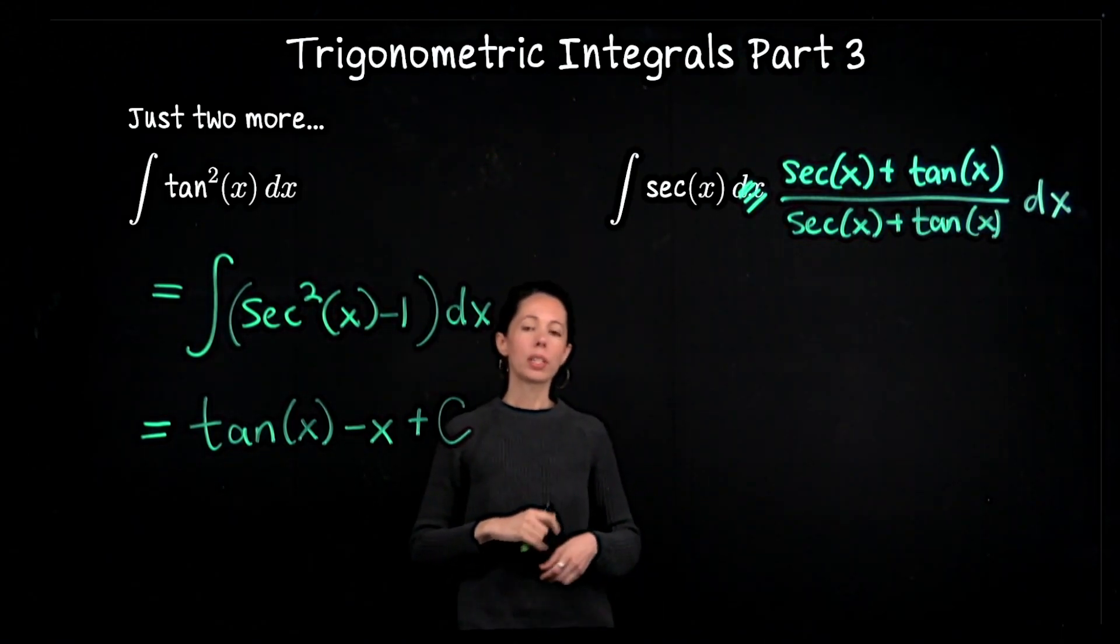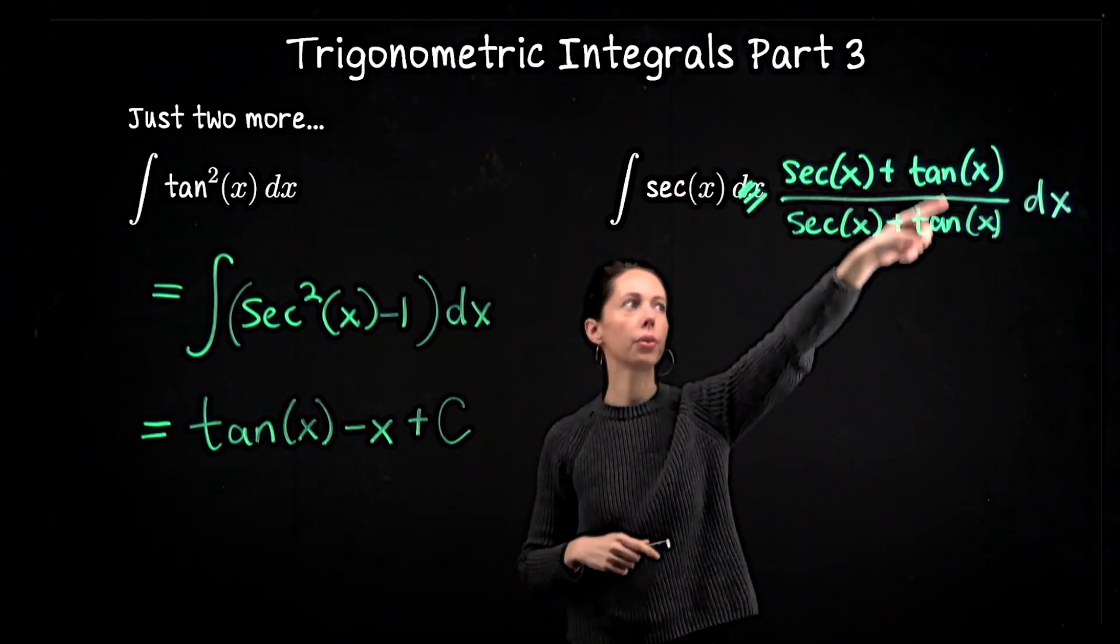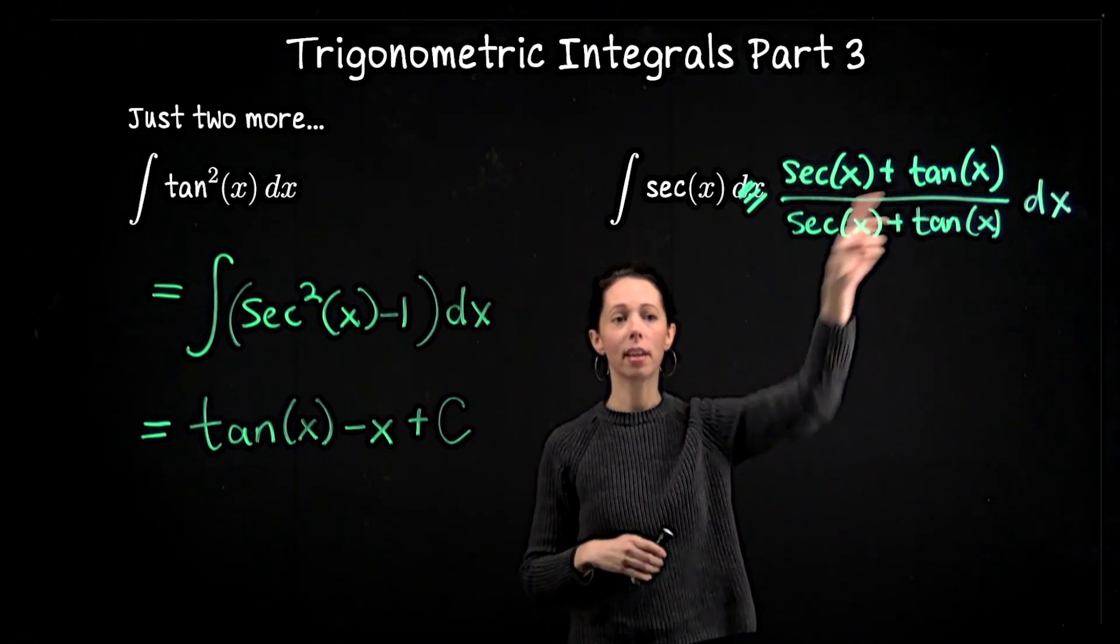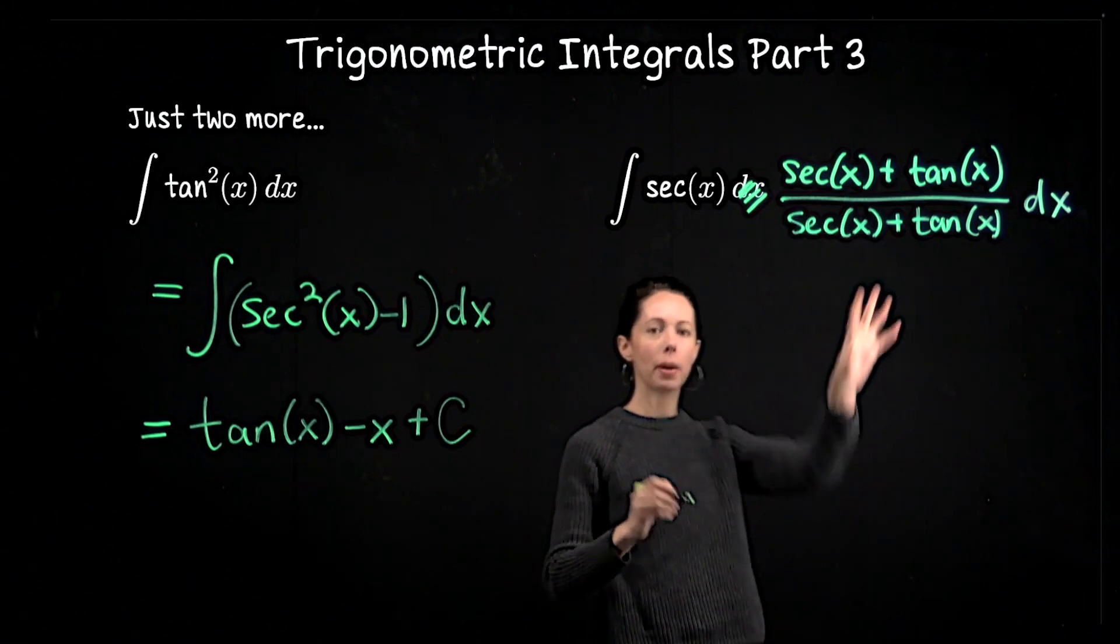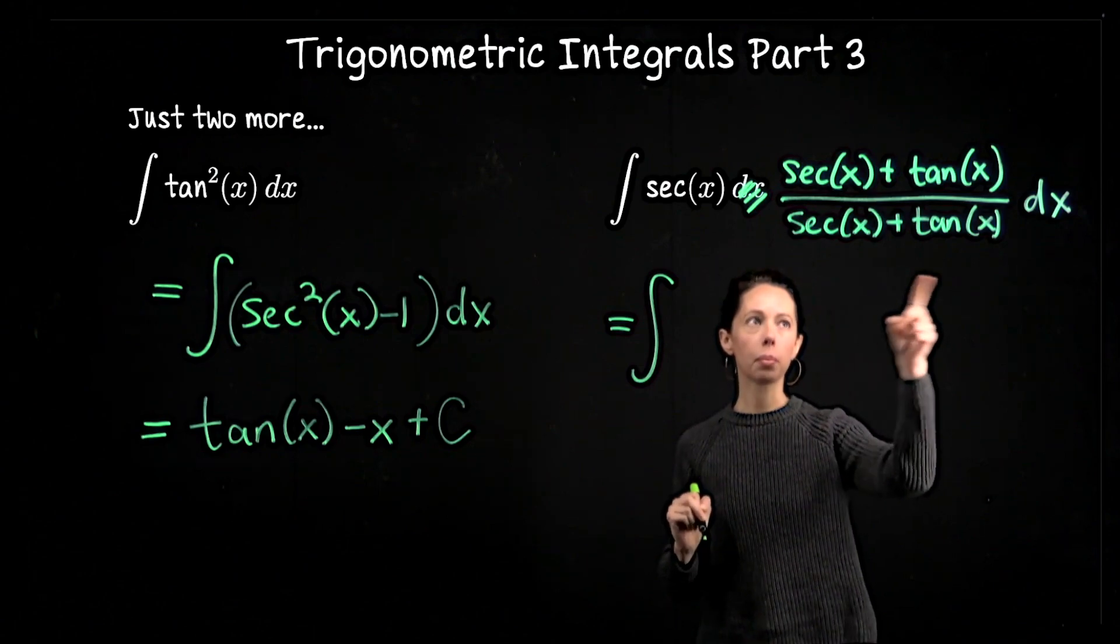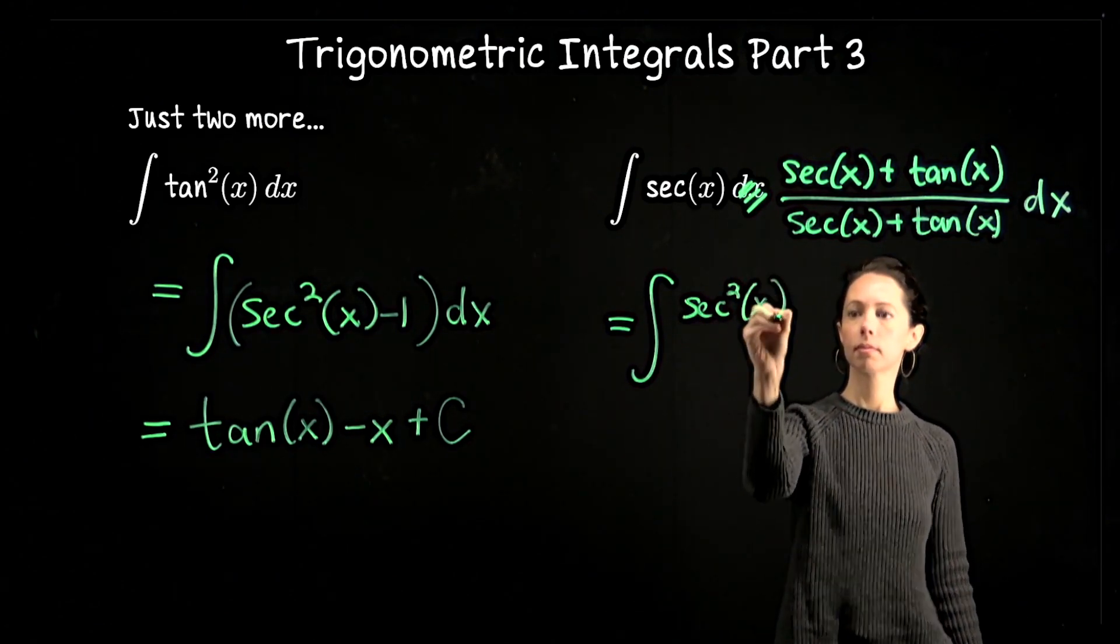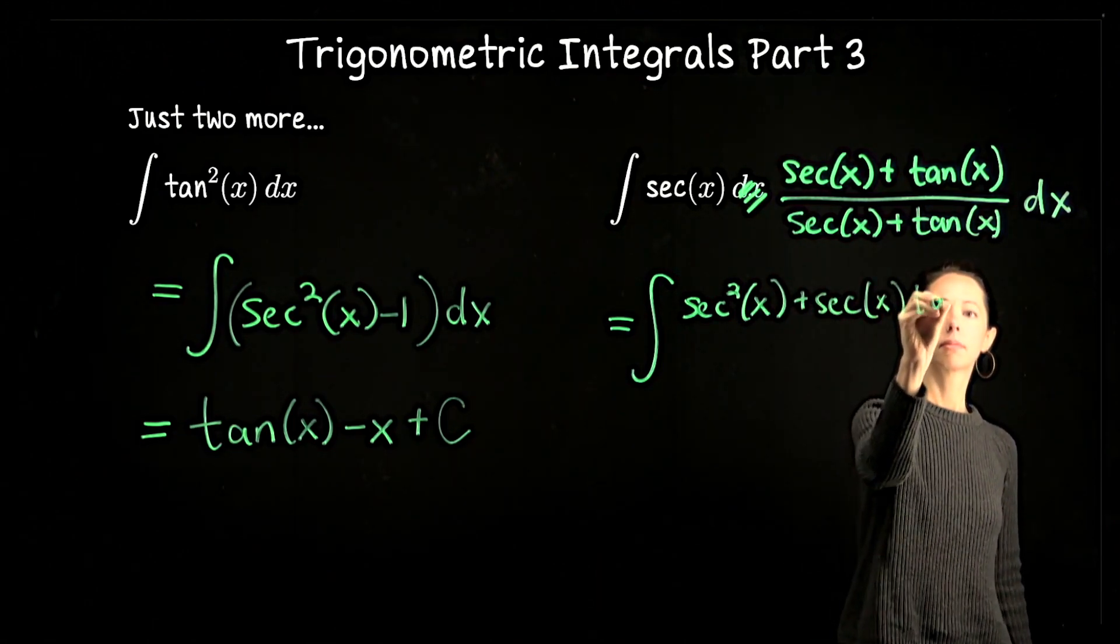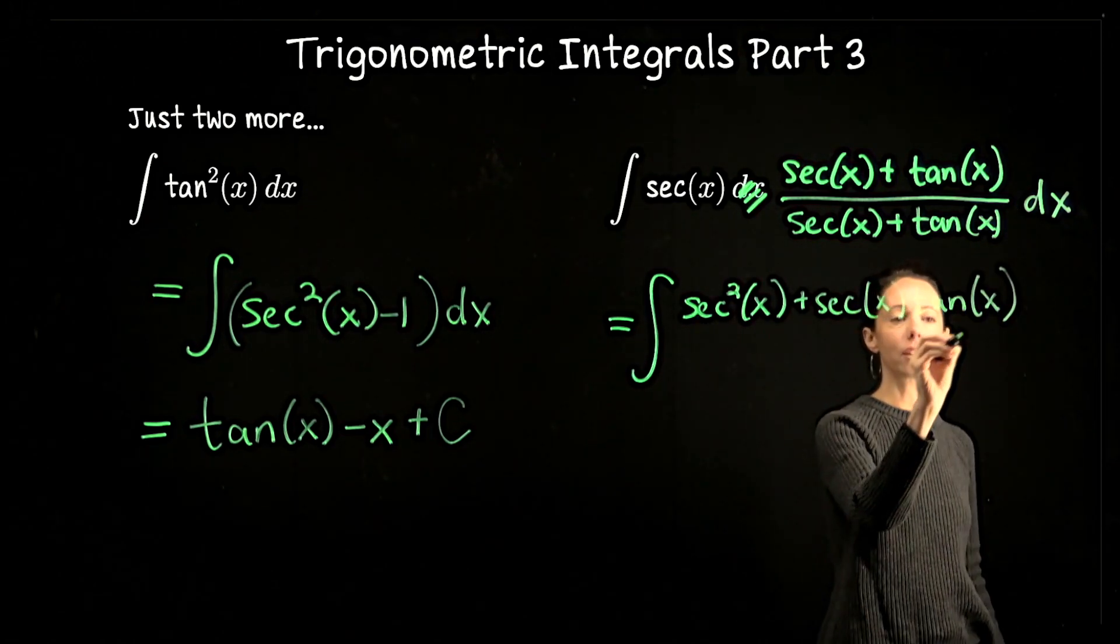The reason we're doing that is if I multiply sec(x) into the numerator, we get sec²(x) + sec(x)tan(x). That's actually a pair of derivatives, so let me rewrite this expression. This becomes the integral of [sec²(x) + sec(x)tan(x)] / [sec(x) + tan(x)] dx.